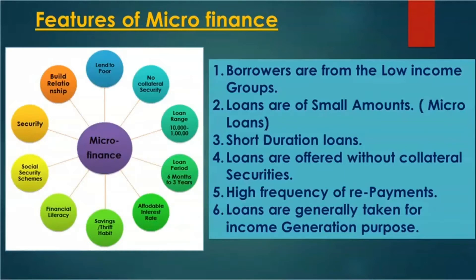Fourth feature: loans are offered without collateral securities. There is no need to give any security to get the loan. As a group member, you can avail the loan. If you take a loan from a regular bank, you have to give securities — sign bond papers, sometimes even land documents. In microfinance, there is no need for collateral securities.